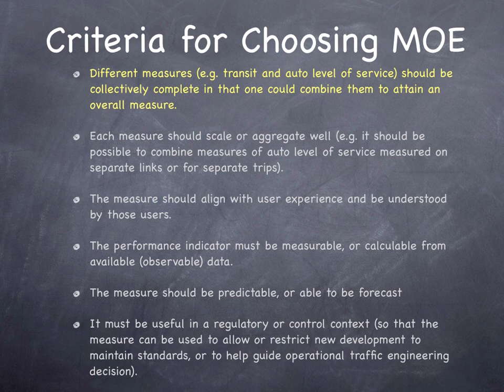We may say that traffic at an intersection is operating at level of service D, E, or F. F is bad, just like a letter grade. There are level of service measures for various systems, including arterials, freeways, ramps, and intersections. There are also LOS measures for bikes and pedestrians, but how do you combine them? This is an unresolved issue in transportation.